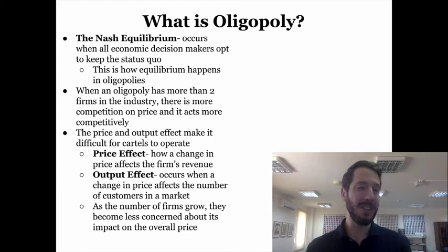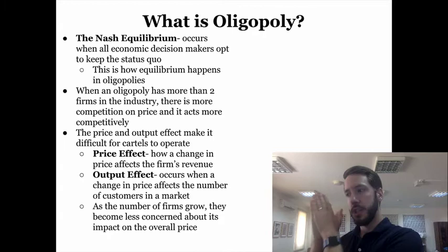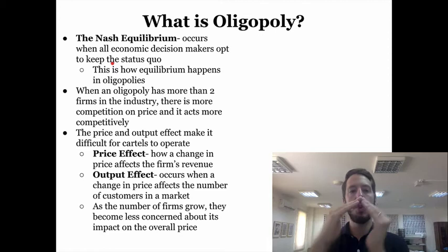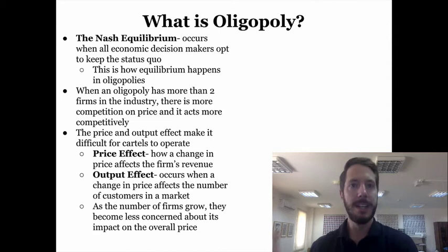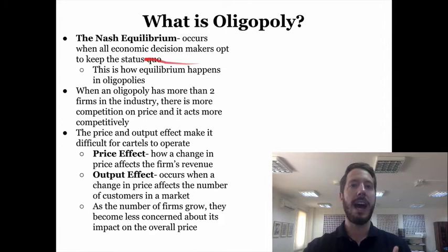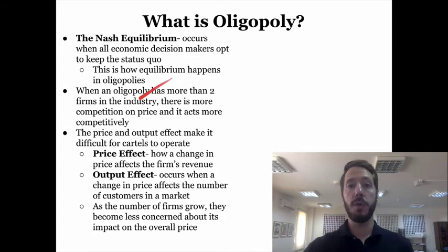Now let's talk about the Nash equilibrium. John Nash, a Nobel Prize winner in economics — and subject of the movie A Beautiful Mind — theorized that all economic decision makers will opt to keep the status quo. You don't want to do anything that will rock the boat too much because that could hurt your profit margins. In a Nash equilibrium, the idea is to just keep everything going the way it is. Too much fluctuation in a market affects overall profits, and that's how equilibrium happens in oligopolies. You don't want to do anything too disruptive or crazy that will upset the equilibrium.